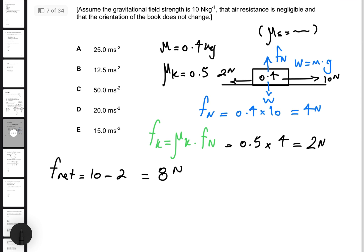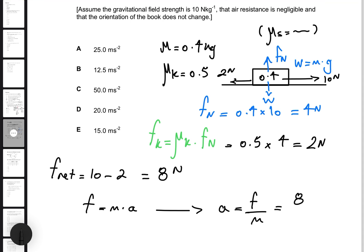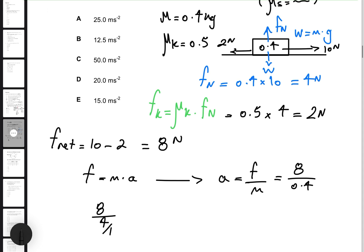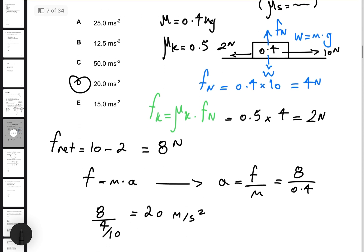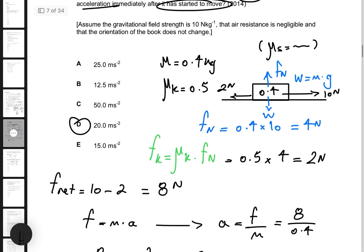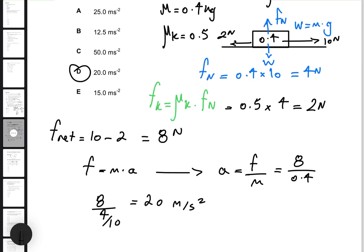Using Newton's second law, F equals ma, acceleration equals net force divided by mass: 8 newtons divided by 0.4 kilograms equals 20 meters per second squared. That makes choice D the correct answer for question eight. In summary: find the normal force, find friction, find net force, then find acceleration. It involves several formulas, but once you get the hang of it, it's straightforward.